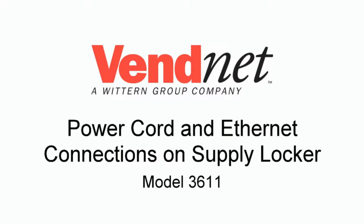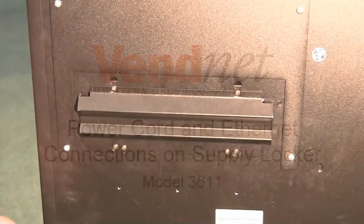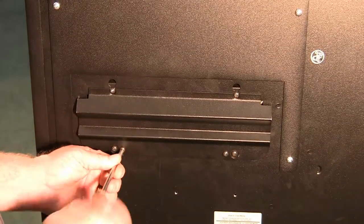Find the cover to the power cord on the back of the machine and remove it by removing the two inboard Phillips head screws and lifting up on the panel.